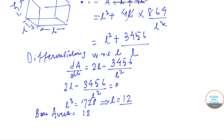The base area is 12 squared, which is 144 square meters. The height is 864 by L squared, which equals 6 meters. So this will be the answer: 144 square meters base area and 6 meter height.